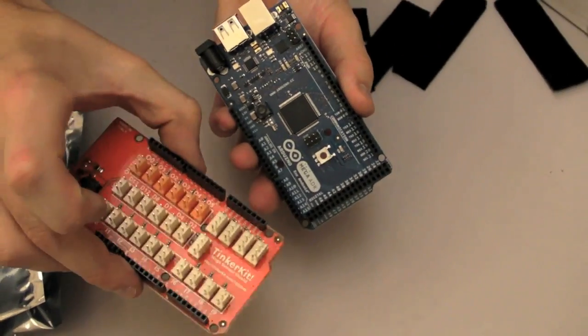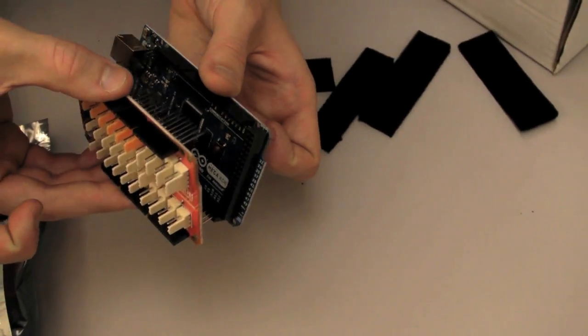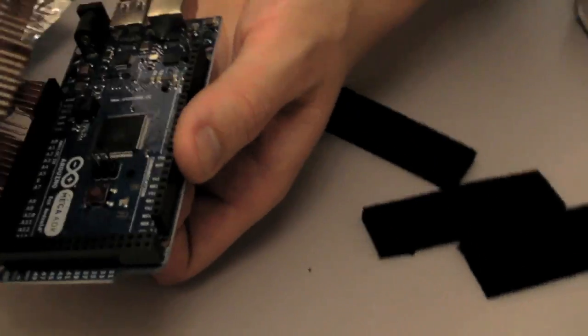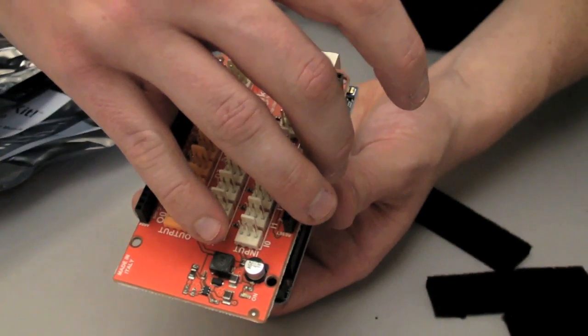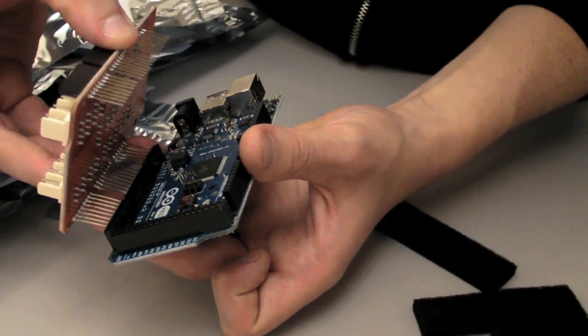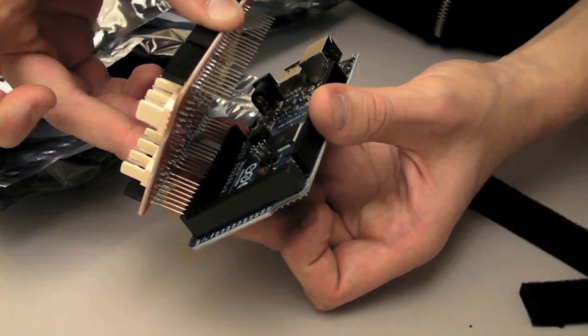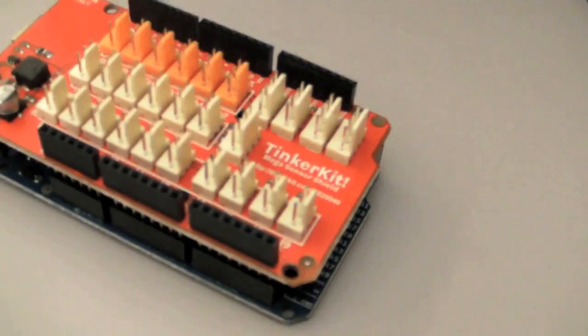So first we're going to put the Tinker Kit shield on top of the Arduino Mega ADK, like so. You want to make sure it only goes on in one direction, so you want to make sure the pins line up. If you're trying to put it on the other way, it's just not going to go on. The spacing isn't correct. So if you just fit it in right there, it can be a little bit difficult to get it in the first time. So you just put it on like that.